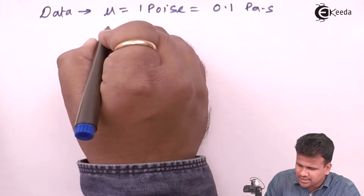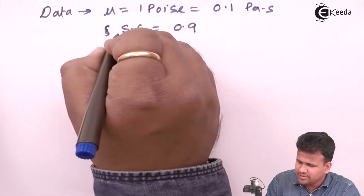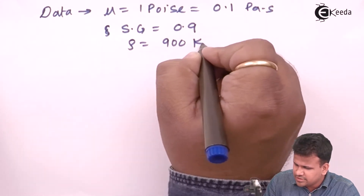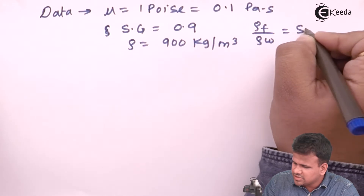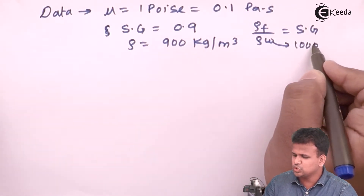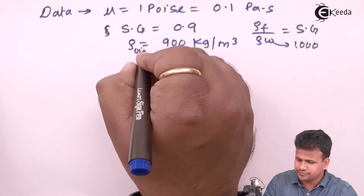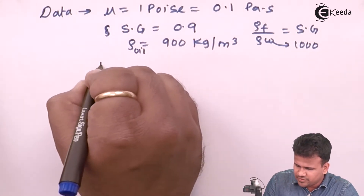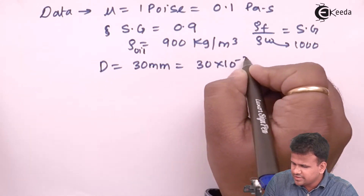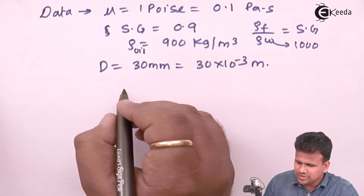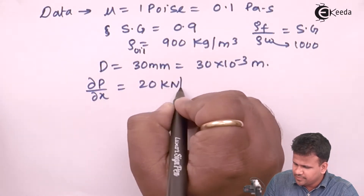The second known quantity is specific gravity Sg = 0.9, which gives a density of 900 kg/m³ — since density of the fluid divided by density of water (1000 kg/m³) equals specific gravity. The third is diameter D = 30 mm = 30×10⁻³ m, and the fourth is the pressure gradient ∂P/∂x = 20 kN/m².